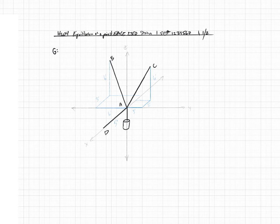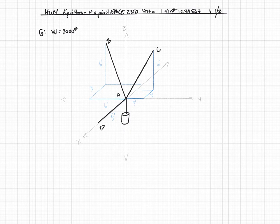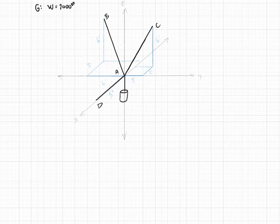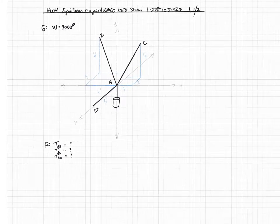The first thing we do is state what's given. Along with the fact that the weight is 2,000 pounds, here's the drawing with appropriate dimensions. What's required: we want the tensions in all three cables — tension in AB, tension in AC, and tension in AD. We only want the magnitudes of those tensions.